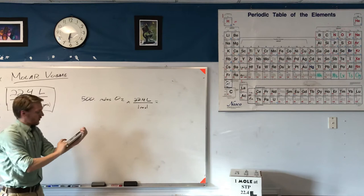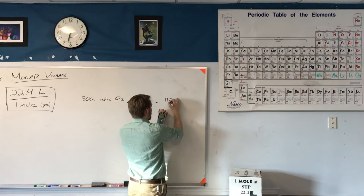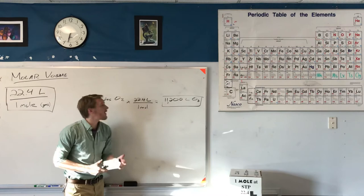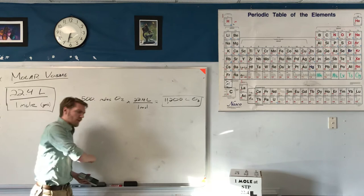500 times 22.4 is going to be 11,200 liters. That's how much space that oxygen gas is going to take up. It's a very large amount—that's 11,000 liters.